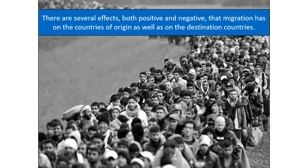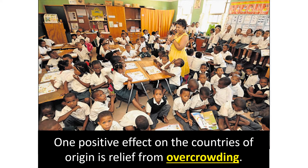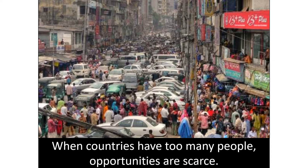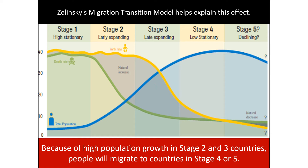Effects of migration. There are several effects — demographic, economic, cultural, and political — on both origin and destination countries. One positive effect for countries of origin is relief from overcrowding. Most countries people leave are in stage two of the demographic transition, with rapidly growing populations, so emigration helps relieve overpopulation. Zelinsky's migration transition model helps explain this: because of high population growth in stages two and three, people migrate to countries in stages four or five.